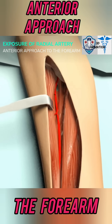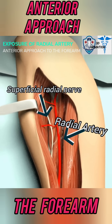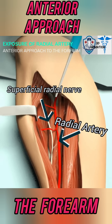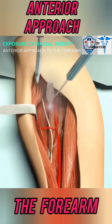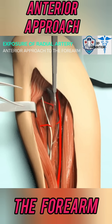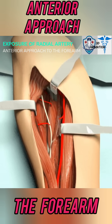Retract brachioradialis laterally to expose the superficial radial nerve on its deep surface. Caution: risk of superficial radial nerve injury. Locate and ligate or diathermy the recurrent and brachioradialis branches of the radial artery.